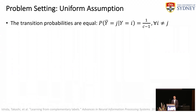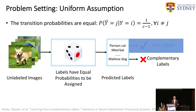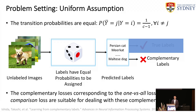According to the values of the transition probability, there are many different problem settings. The first setting is the uniform setting, where the transition probabilities are equal. This can occur when we randomly assign labels with equal probability — the generated complementary labels are uniform. In this setting, we can modify the one-versus-all loss and the pairwise comparison loss to deal with uniform complementary labels. For more information, please refer to the ICML paper.